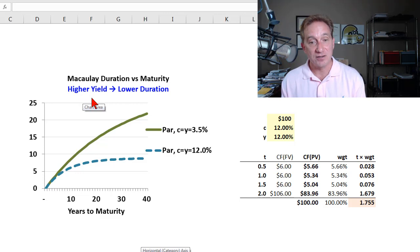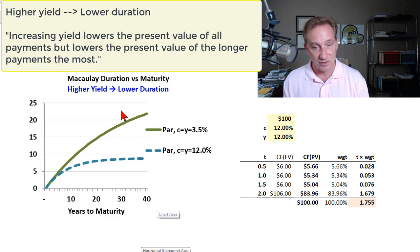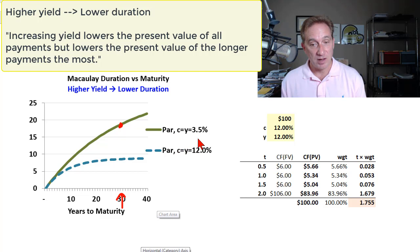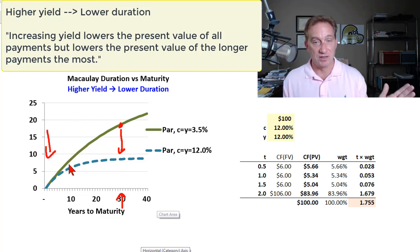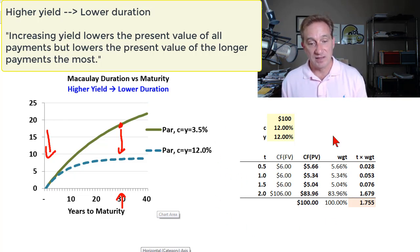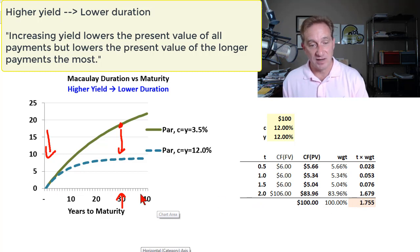Higher yield implies lower duration. Visually, we can take a vertical slice at 30 years: starting at the low yield bond of 3.5%, as we move to a higher yield, the duration drops. As we increase the yield, we get a lower duration. To explain the intuition, I'm computing Macaulay duration at a very short maturity — roughly two years — to keep the example simple.